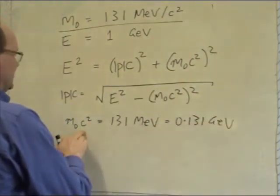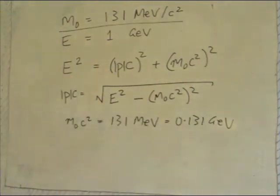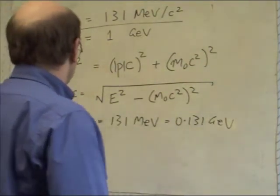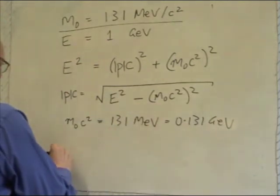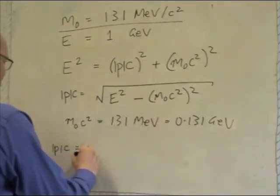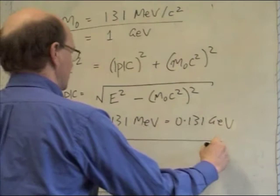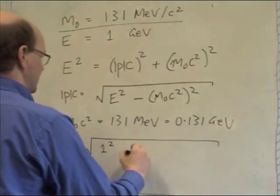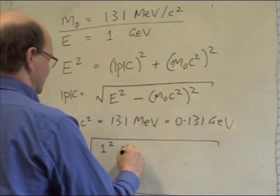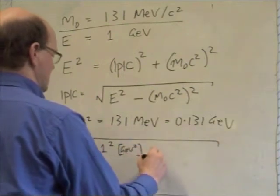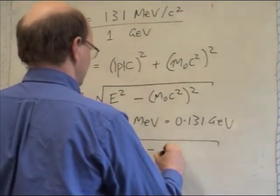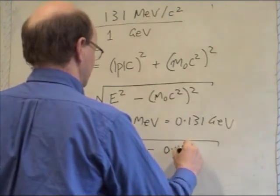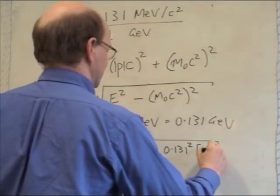So M nought C squared now has the same units as E. So substitute those directly into the formula, you get P times C equals the square root of 1 squared, and that's in GeV squared, minus 0.131 squared, which is also in GeV squared.